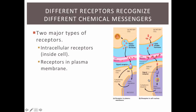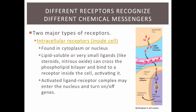There are two types of signal receptors, and both are proteins. One type is found inside a cell and is known as an intracellular receptor. The other type is found embedded in the plasma membrane. In order for a signaling molecule, or ligand, to bind to an intracellular receptor, it has to get into the cell. This means the ligand must be either lipid soluble or very small, like steroids and the gas nitrous oxide. These ligands, because they're small and nonpolar, can cross the phospholipid bilayer and bind to an intracellular receptor. When the ligand binds to an intracellular receptor, we call that an activated ligand-receptor complex. This complex can then enter the nucleus and turn on or turn off genes, which in turn influences gene expression and what proteins the cell makes.